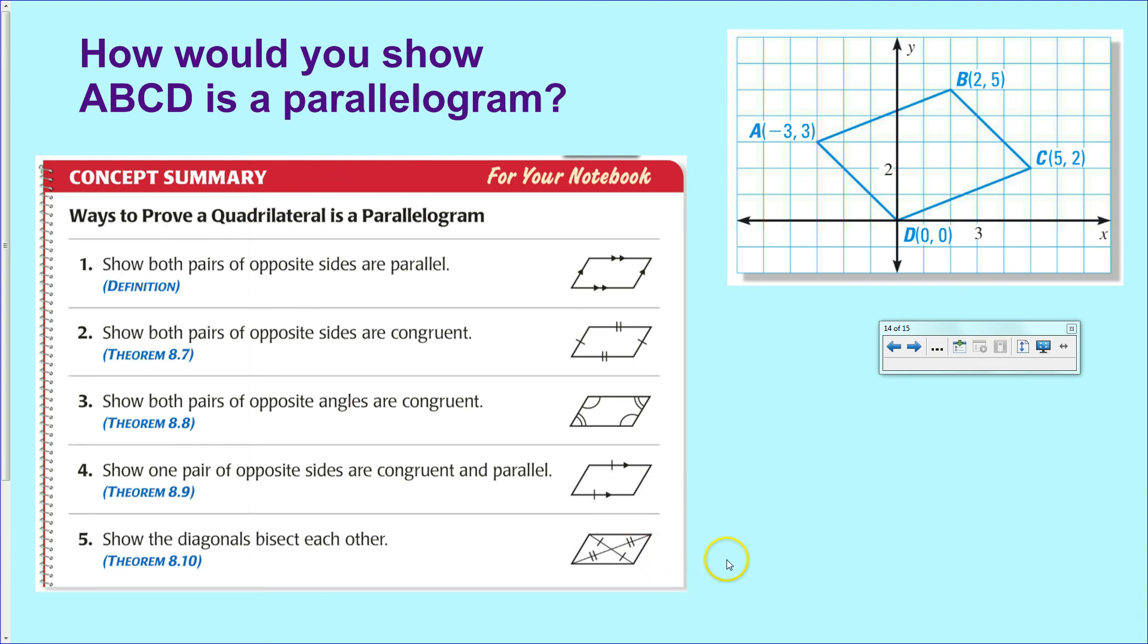Number five, you could be very creative here, and I think this would definitely be the simplest one if you were quite clever. However, you want to show that the diagonals bisect each other.